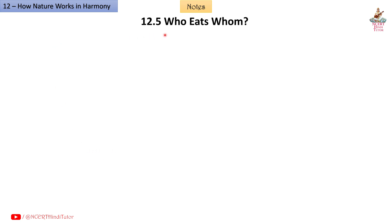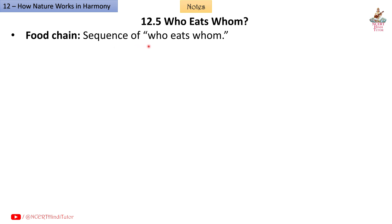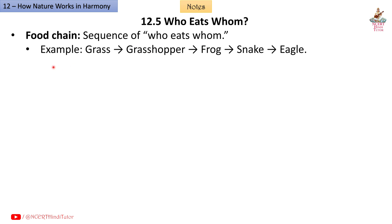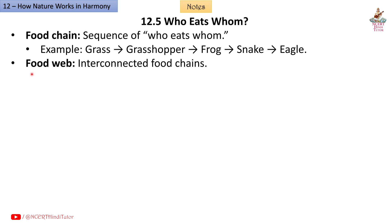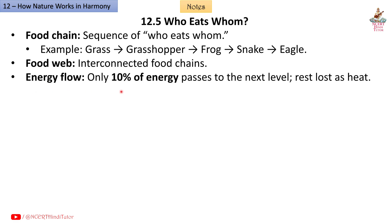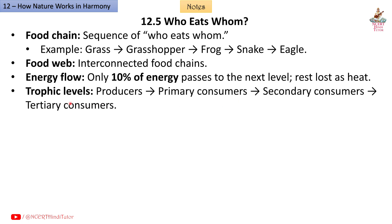12.5: Who eats whom? Food chain: a sequence of who eats whom. Example: grass → grasshopper → frog → snake → eagle. Food web: interconnected food chains. Energy flow: only 10% of energy passes to the next level; the rest is lost as heat. Trophic levels: producers, primary consumers, secondary consumers, tertiary consumers.